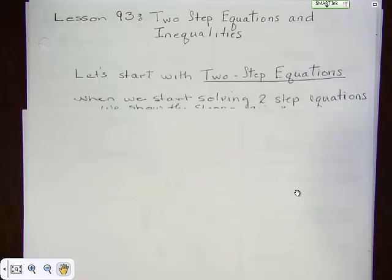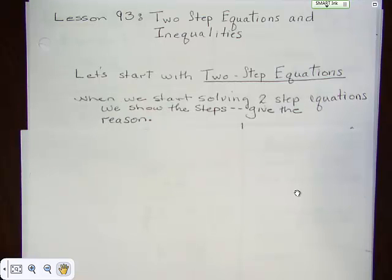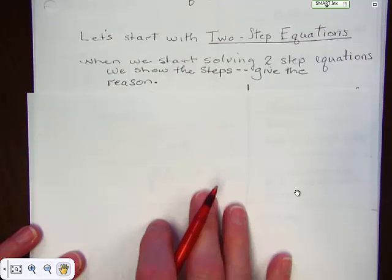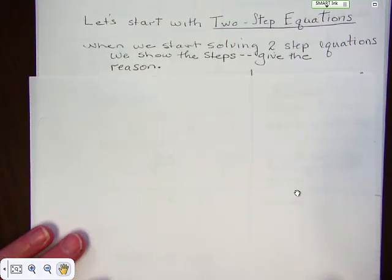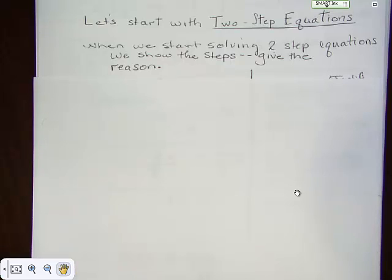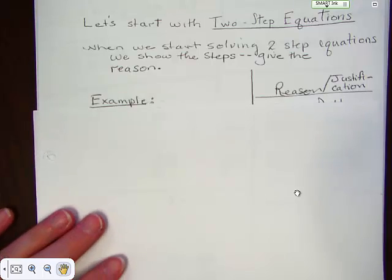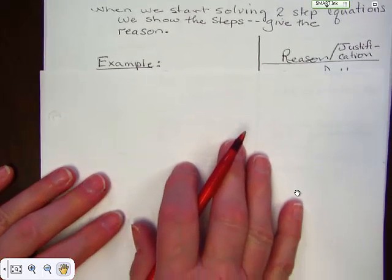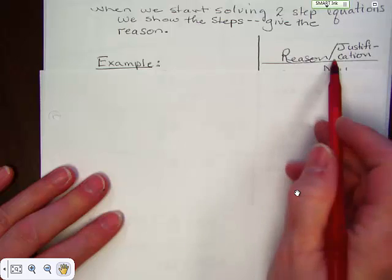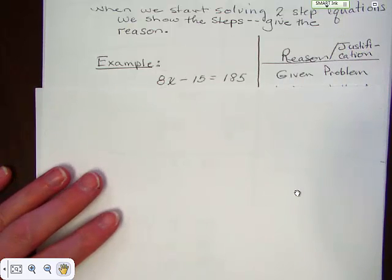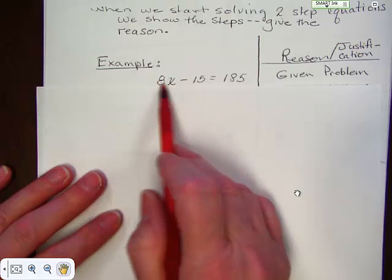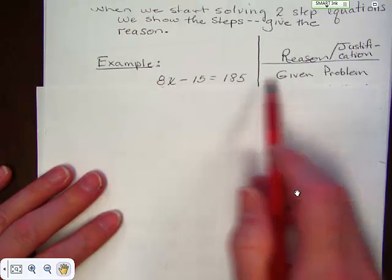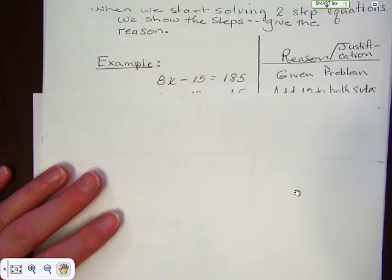Let's start with two-step equations. When we start solving two-step equations, we show the steps. And when we show the steps, we give the reason or justification for what we're doing. I will have the problem and then on the right I'll have the reason or the justification. For this very first problem: 8x minus 15 equals 185. That is the given problem — that's the problem you started with.